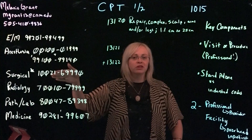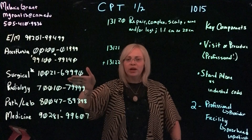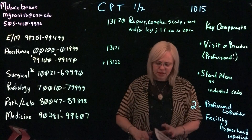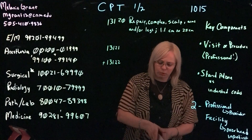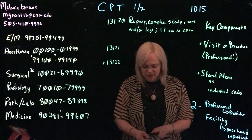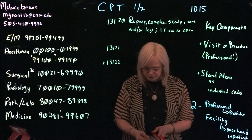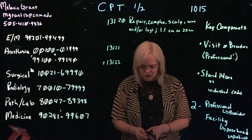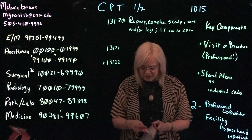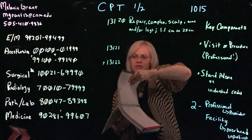Your surgical section is the largest part of your CPT, ranging from 10021 all the way up to 69990. To give you an idea of how large that is — your textbook lists it as one section, but it's actually split up based on different body areas, going completely from head to toe, including auditory. Holding up the book here, you can see that the surgery section is the majority of it.